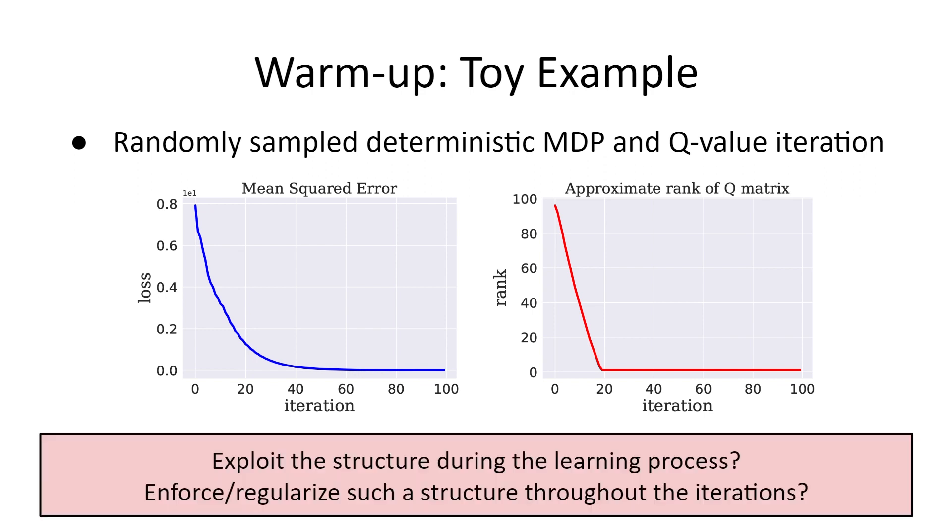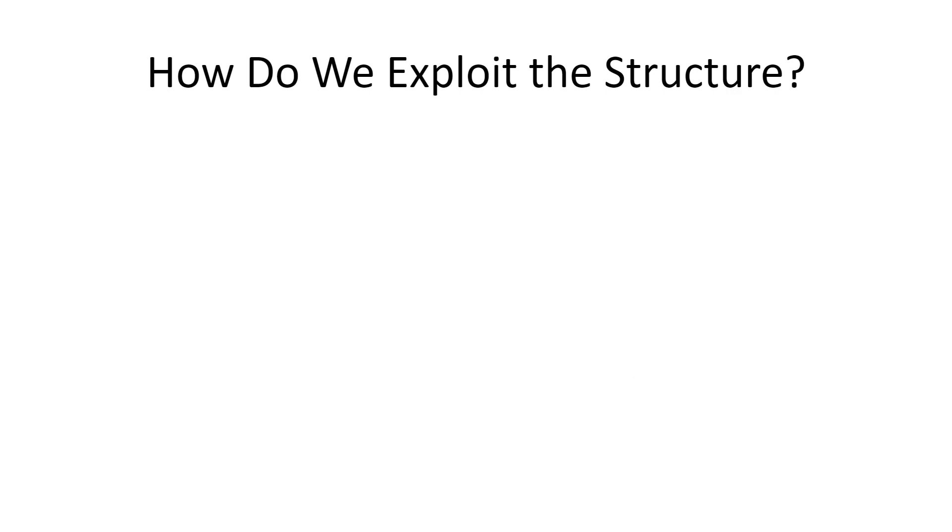With this in mind, a natural question arises. If the eventual matrix is low rank, can we exploit the structure during the learning process? Why not enforcing such a structure throughout the iterations? In other words, with the existence of a global low rank structure, how can we exploit the structure?